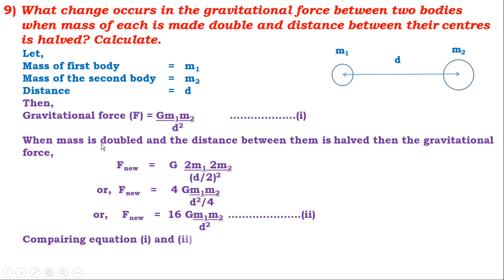Therefore, F_new = 16F. This means the new gravitational force is 16 times greater than the old gravitational force. This example shows how changes in mass and distance affect gravitational force, which can be calculated by making two equations and comparing them.